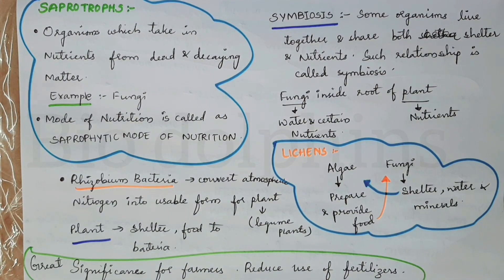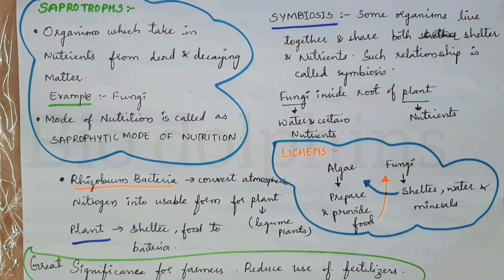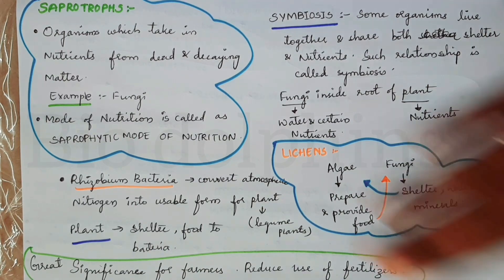Farmers benefit from this association because it provides natural fertilizers, so they don't need to use as many chemical fertilizers. That is why this relationship has great significance for farmers. That concludes the Nutrition in Plants chapter. Thank you so much for watching this video — see you in the next one, bye!